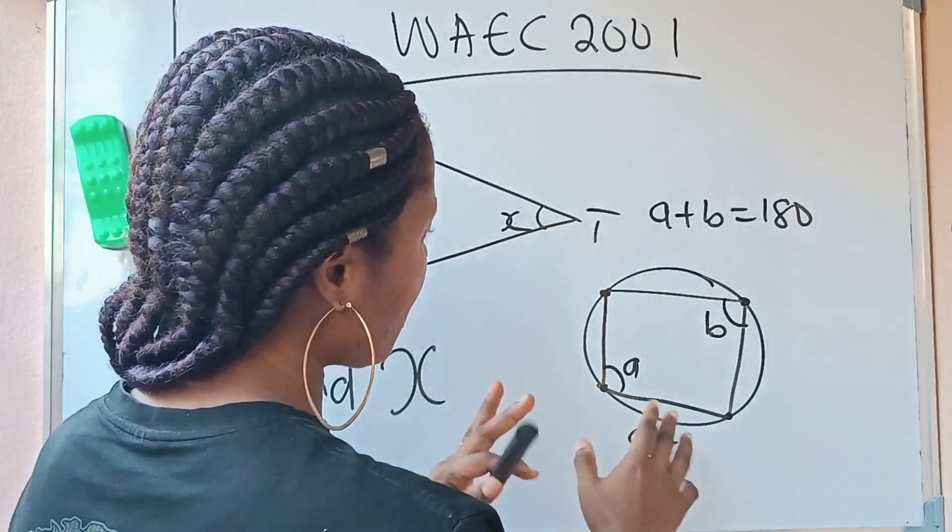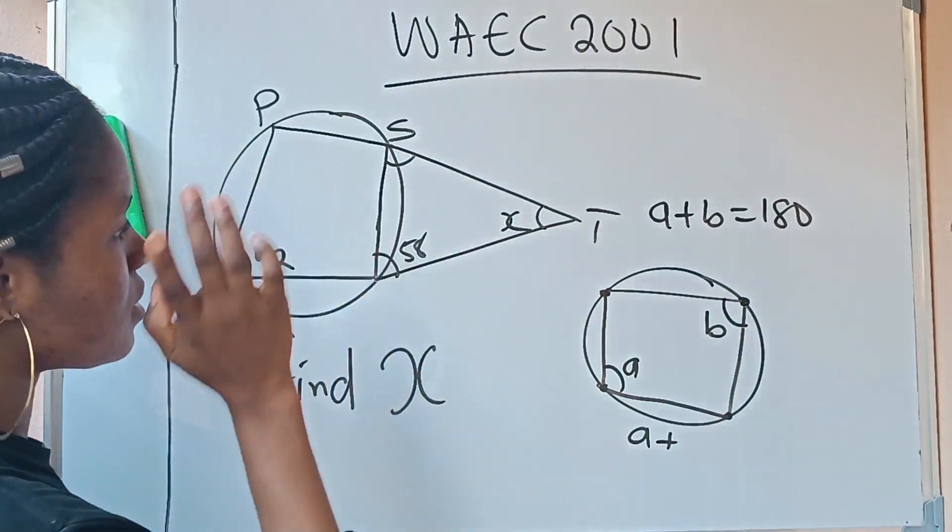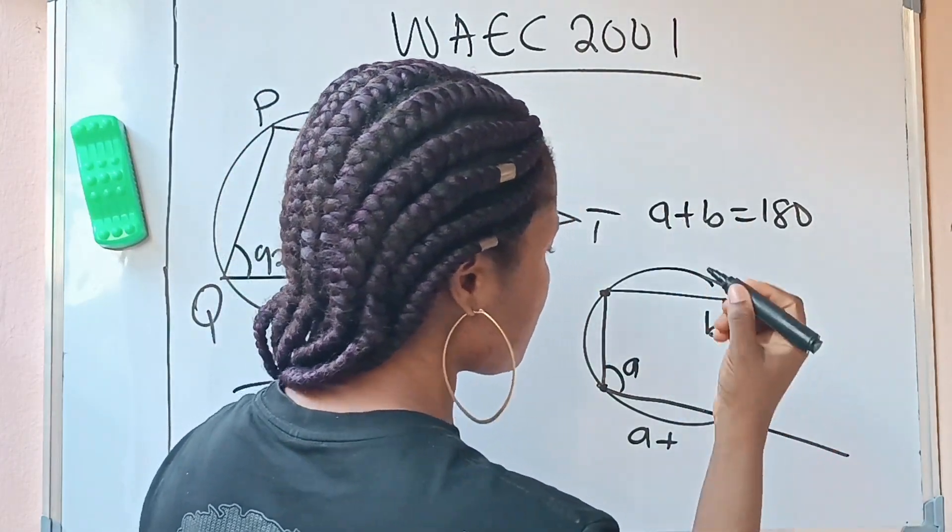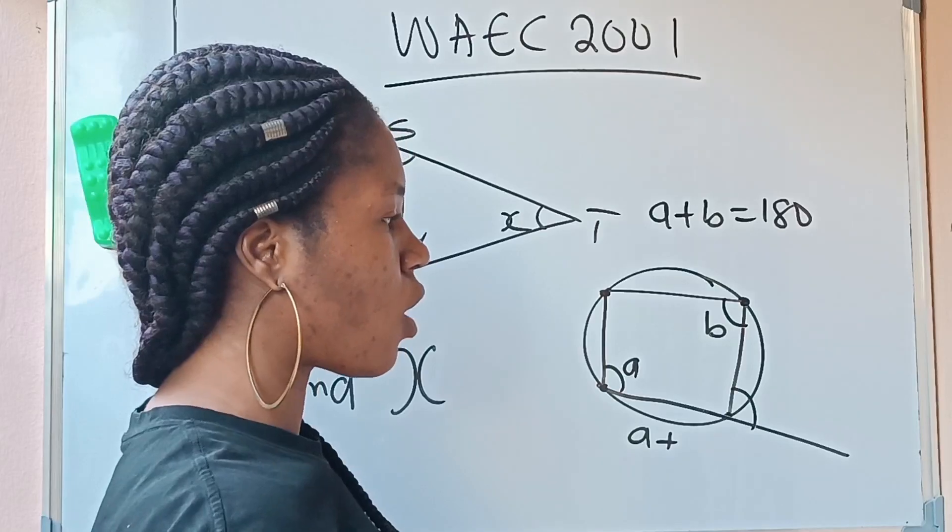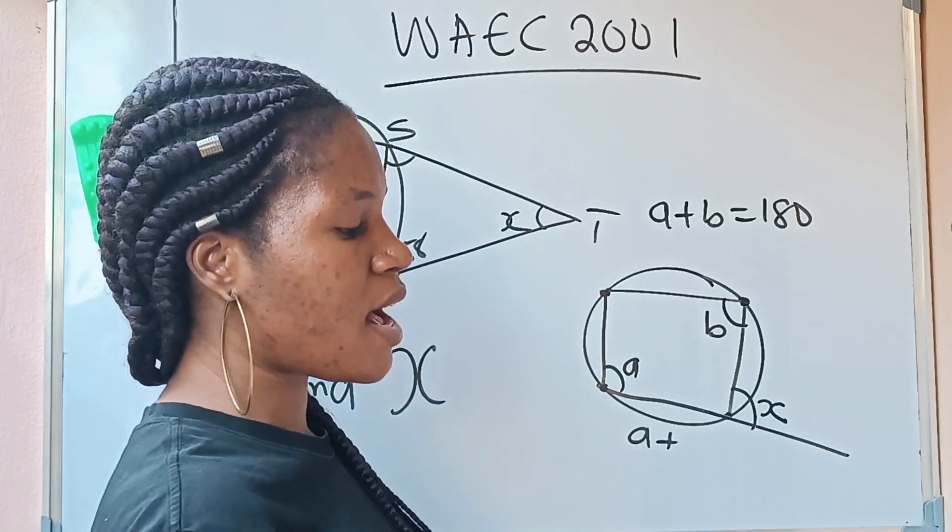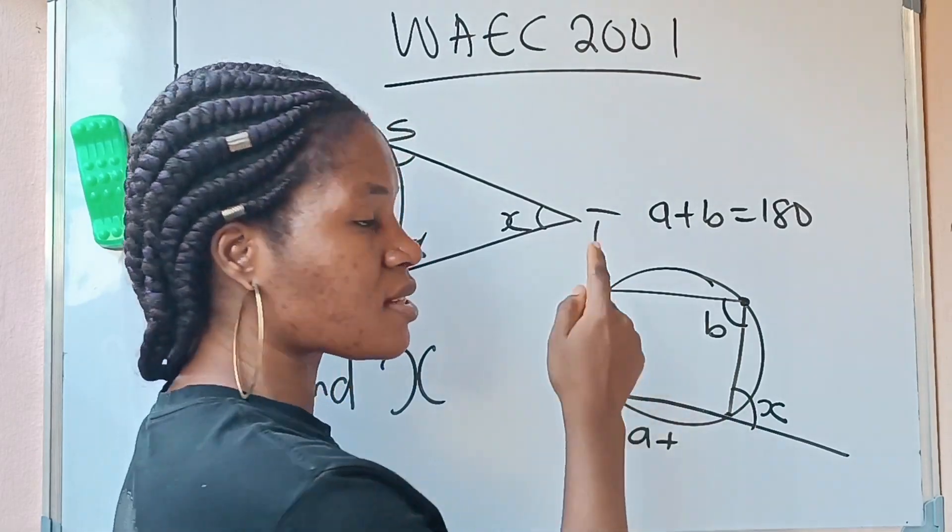The second theorem about cyclic quadrilateral that we are going to apply to this states that the exterior angle of a cyclic quadrilateral, for example, if this is the exterior angle, this particular place, now if we call it X,